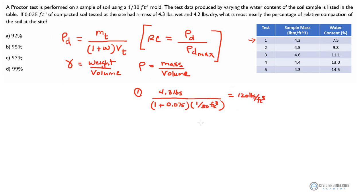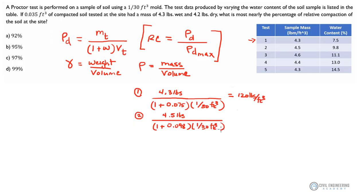Let's run that now for test number two. We're dealing with 4.5 pounds, and we're going to divide all of that by 1 plus the water content, which in this case is 0.098, and again times 1/30th cubic foot. So for test number two, if we run that through, we should come up with 122.9 pounds per cubic foot.